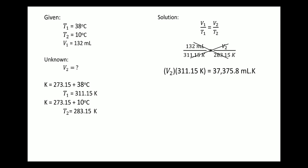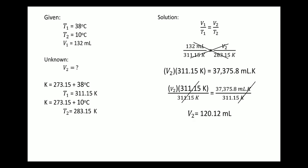To find V2, we need to cancel 311.15 by dividing both sides by 311.15. We cancel it on the left side, and on the right side we cancel Kelvin. So 37,375.8 mL divided by 311.15 is equal to 120.12 mL. That is the value for the final volume.